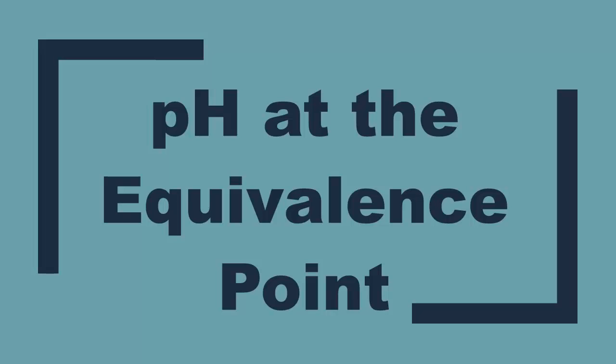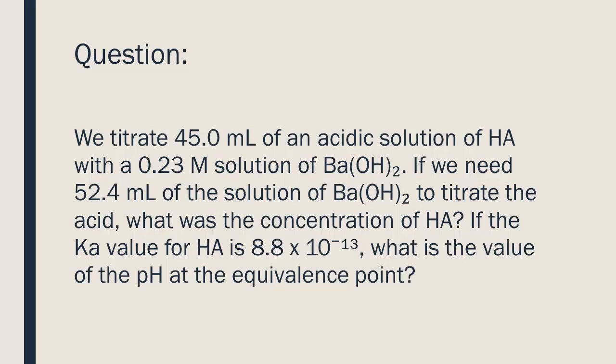pH at the equivalence point. We titrate 45 milliliters of an acidic solution of HA with a 0.23 molar solution of BaOH₂. If we need 52.4 milliliters of the BaOH₂ solution to titrate the acid, what was the concentration of HA? If the Ka value for HA is 8.8 times 10 to the negative 13, what is the value of the pH at the equivalence point?